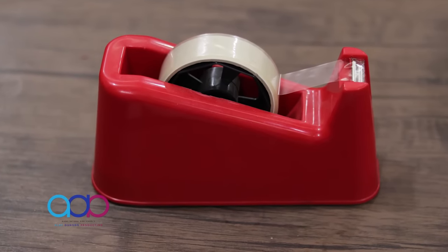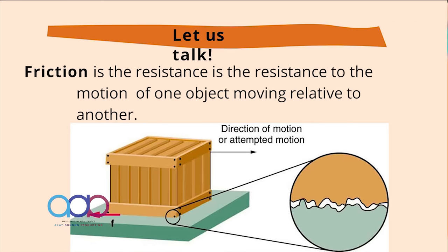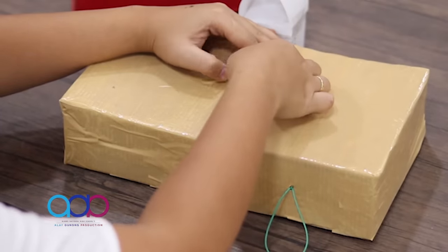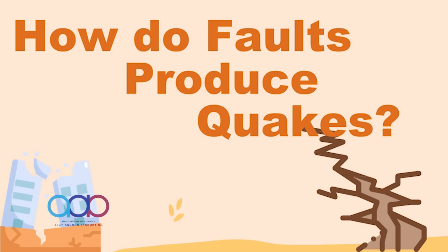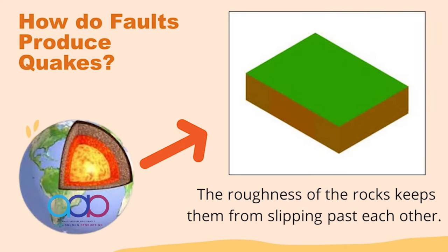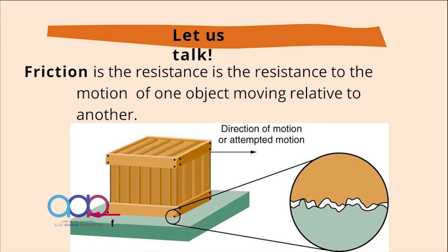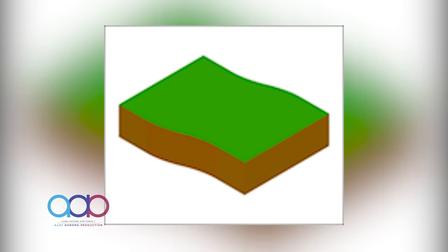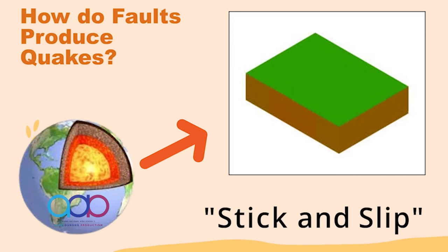In this activity, the tape represents friction in real life. Friction is the resistance to the motion of one object moving relative to another. If the tape is too sticky, it will never come off no matter how much the rubber band is pulled, but since we tape it on just enough, the box jerks free. Imagine the boxes as ground and the boundary between them as a fault. Energy from inside the Earth exerts a force on the rocks along a fault. But the rocks do not move right away because of friction — the roughness of the rocks keeps them from slipping past each other. When the limit is reached, the rocks suddenly slip and an earthquake occurs. Some scientists describe this process as stick and slip.